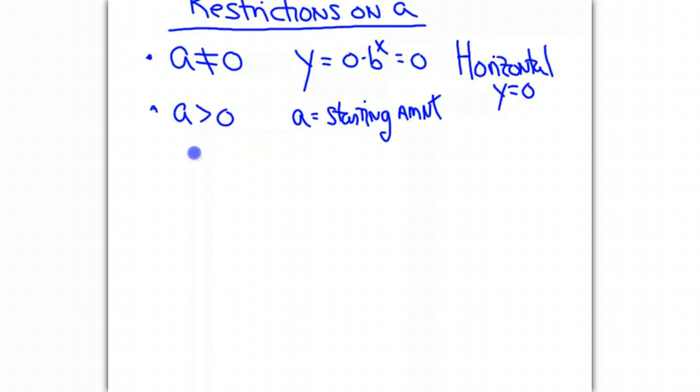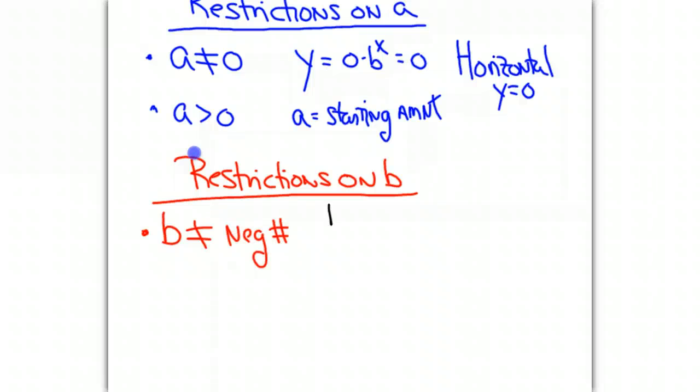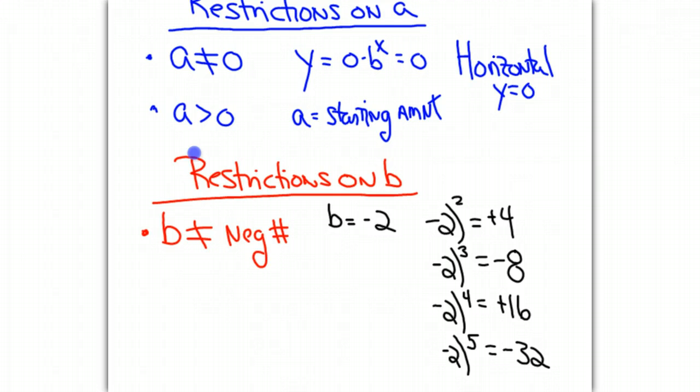There are a few more restrictions on b. The first restriction is that b cannot be a negative number. The reason for this is quite simple. If we let b equal a negative number, for example, if b equaled negative 2, then negative 2 raised to the second power would give us positive 4. But negative 2 raised to the third power would give us negative 8. Negative 2 raised to the fourth would take us back to a positive number, and negative 2 to a fifth would take us back to a negative number. When b is negative, the b value jumps back and forth between positive to negative, and this is not how an exponential function behaves. So b cannot be negative.